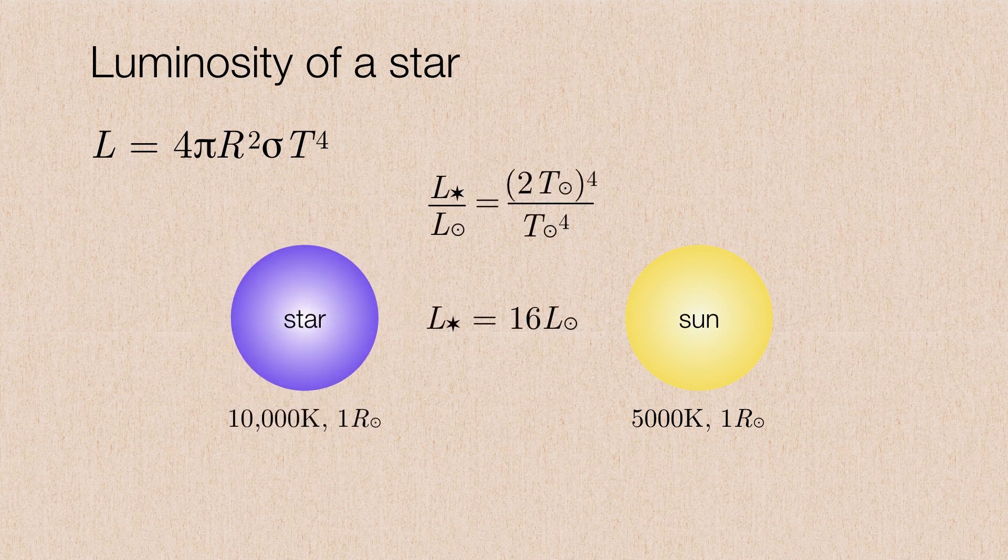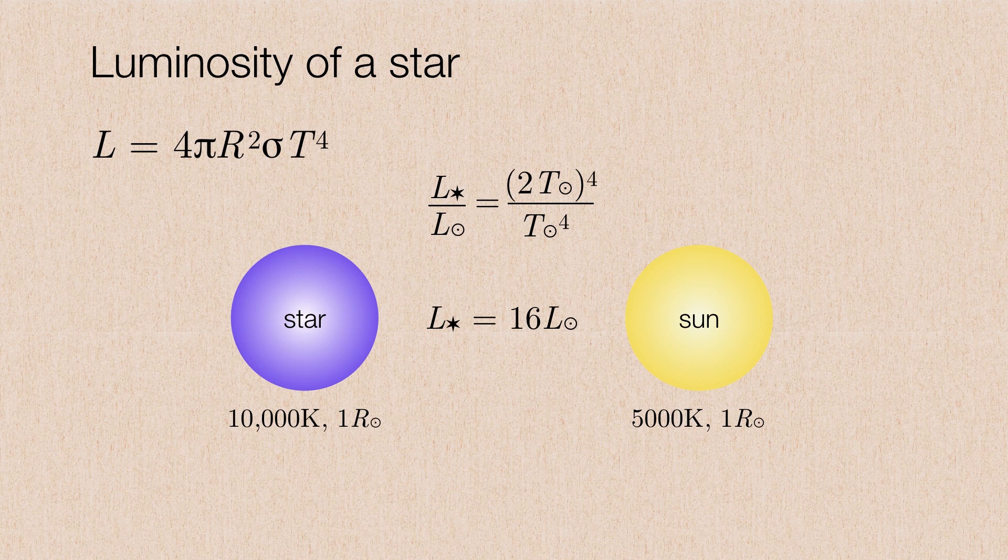If we just bring the star back to its original radius and merely double its temperature, then we're back to this factor of 16 increase in luminosity because twice the temperature raised to the fourth power is equal to 16.